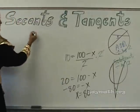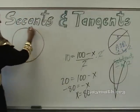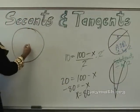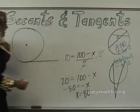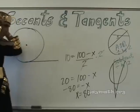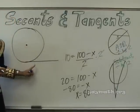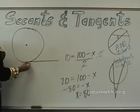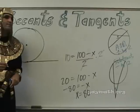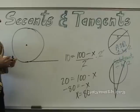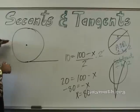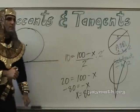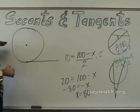One more rule. Now we're talking about a line that doesn't go through the circle twice — it's called a tangent. It hits at one point. A secant is a line that hits the circle twice; a tangent hits only once.